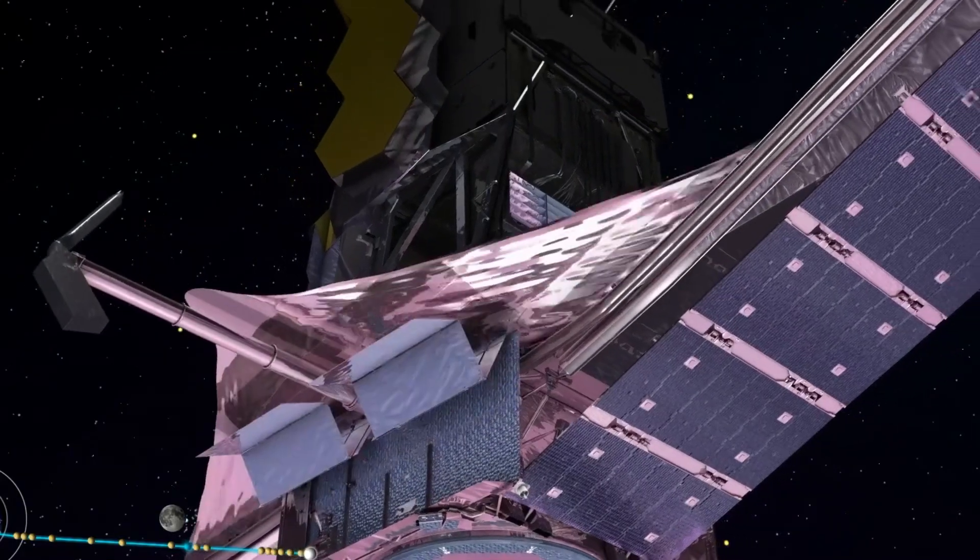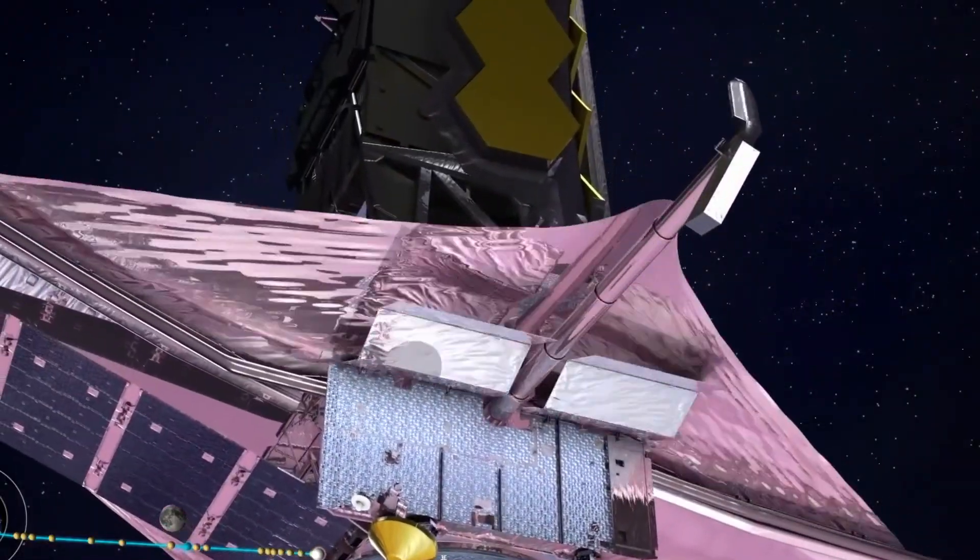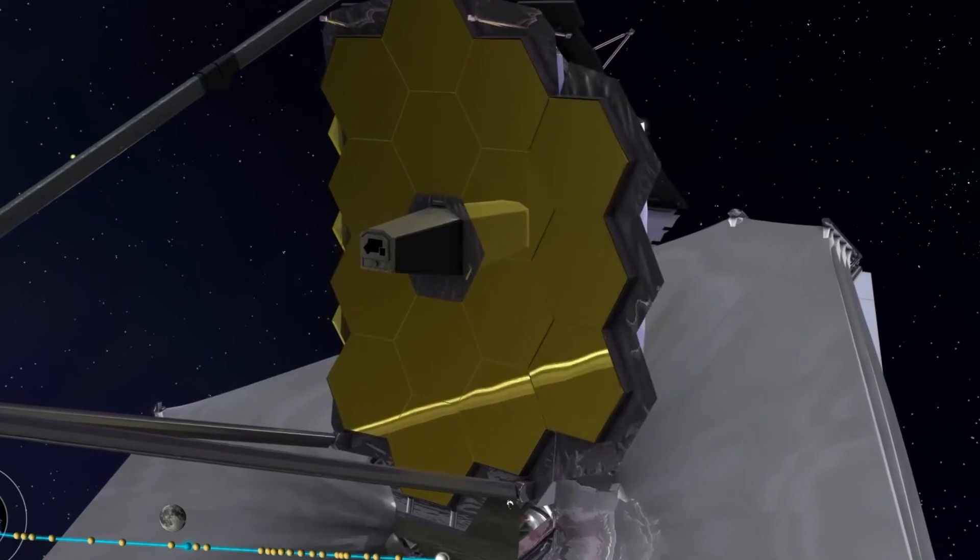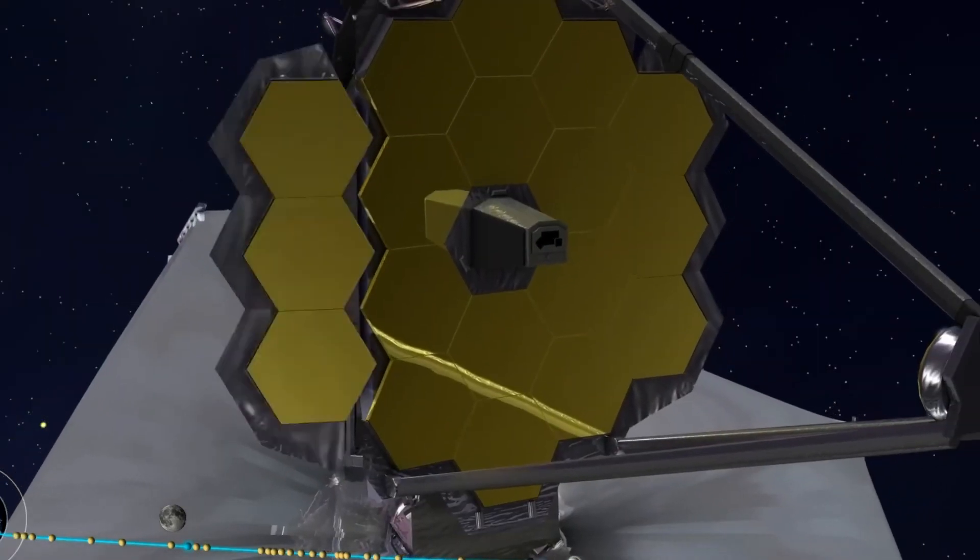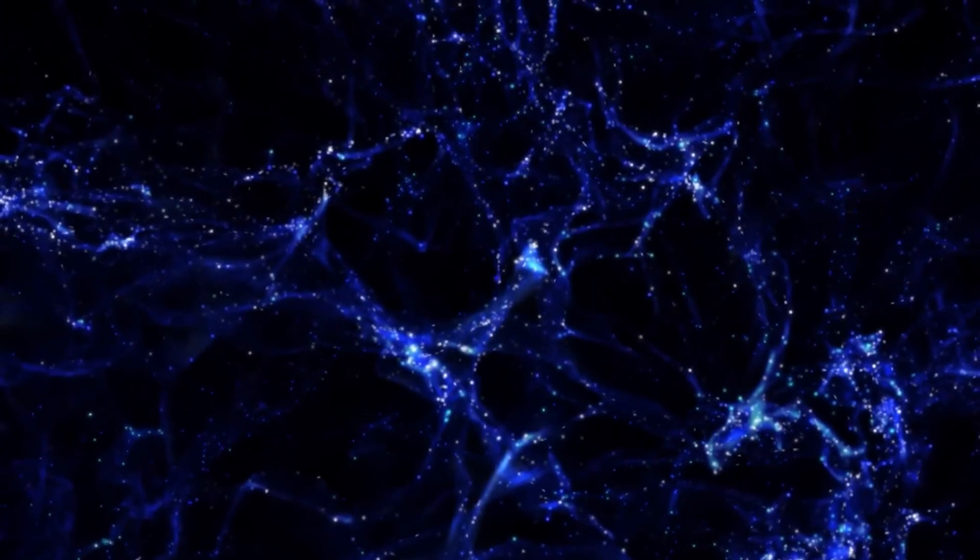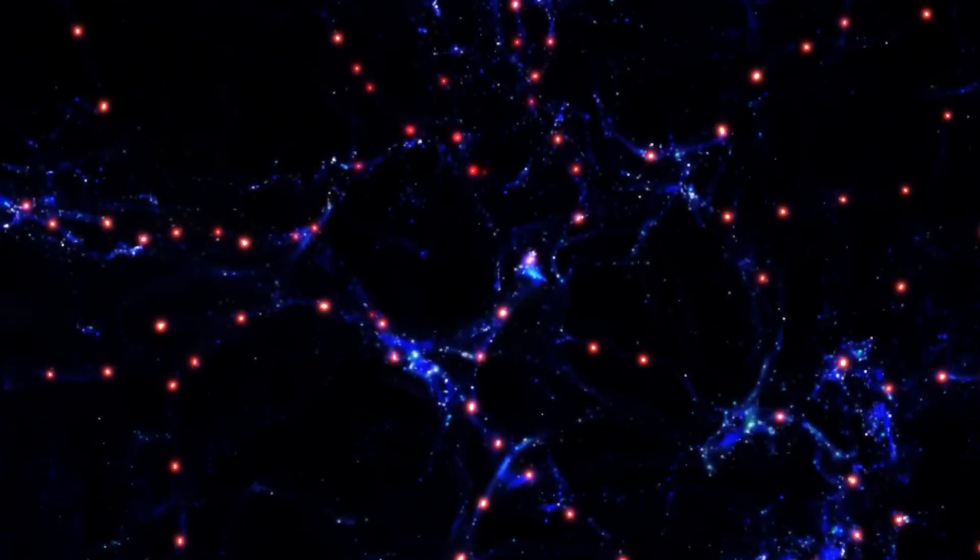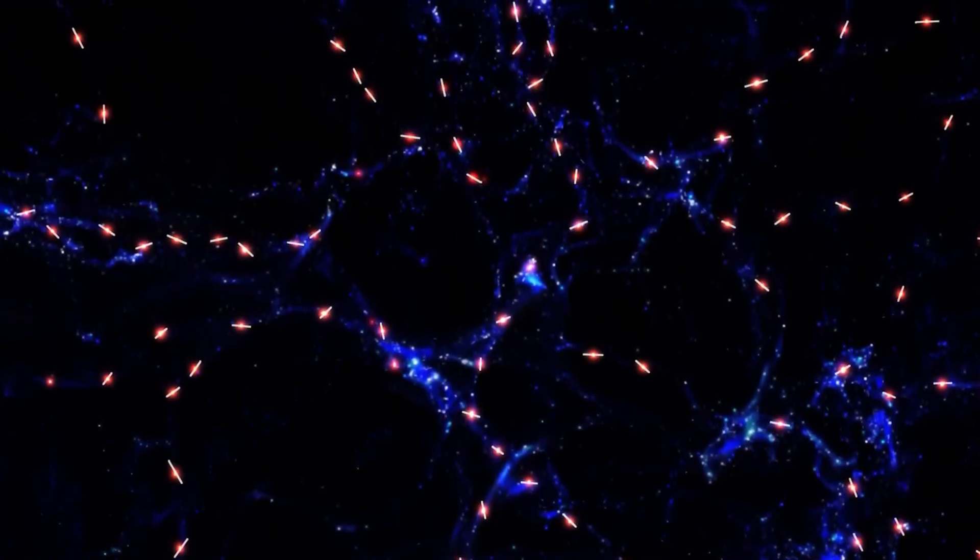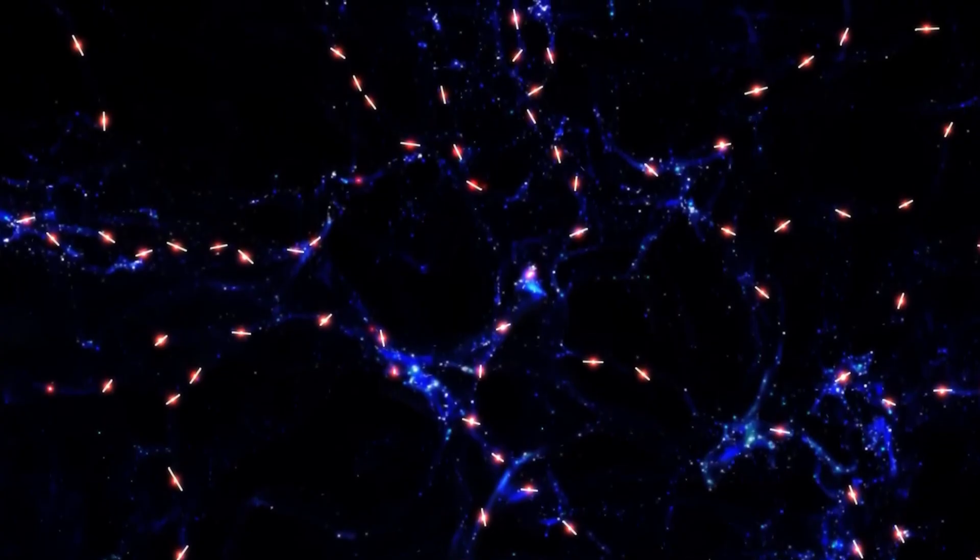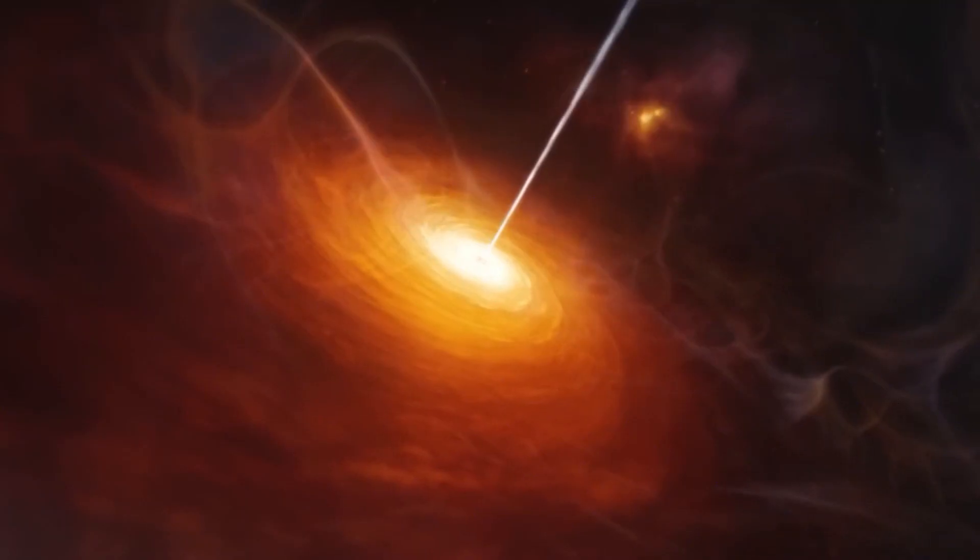Galileo spent a lot of time perfecting his telescope. The first one he made could magnify objects by a factor of 3, making them look three times larger than they were. Later versions of his telescope could magnify by a factor of 8 and eventually by a factor of 30. Telescopes and outer space are inseparable. This is because space is so enormous.